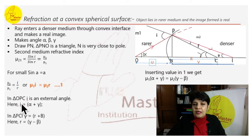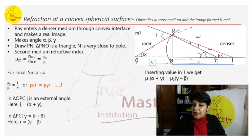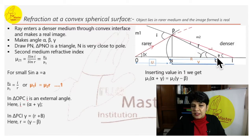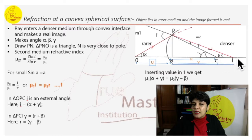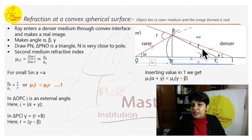In triangle OPC, where C is the center of the convex spherical surface, angle i is an exterior angle, so i equals alpha plus gamma. Similarly, in triangle PCI, the exterior angle gives us gamma equals r plus beta, or r equals gamma minus beta.